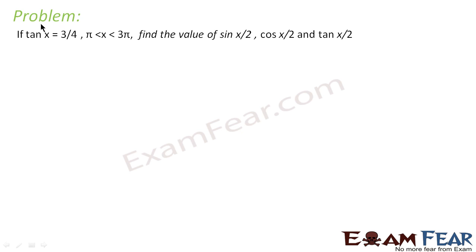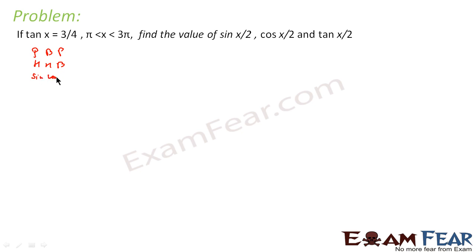Here tan x = 3/4 and x is between π and 3π/2. We have to find sin(x/2), cos(x/2), and tan(x/2). We know the mnemonic Pandit Badri Prashad Hari Hari Bol, where P is sine, B is cos, and H is tan — corresponding to perpendicular, base, and hypotenuse. So p/b = 3/4.